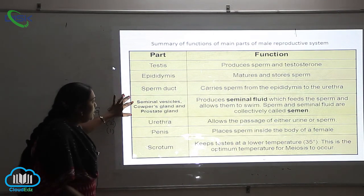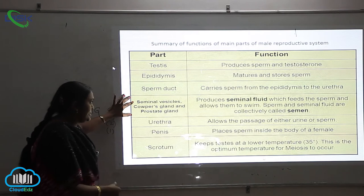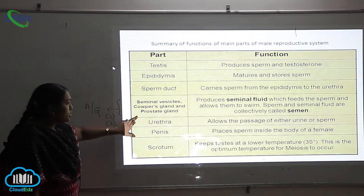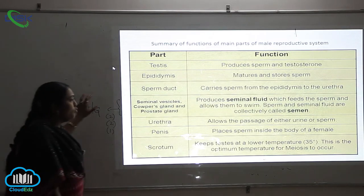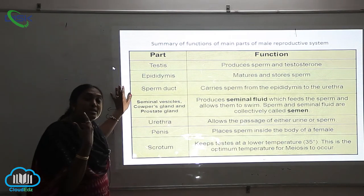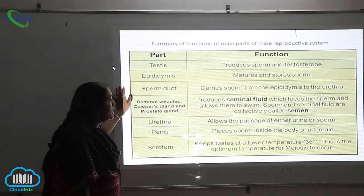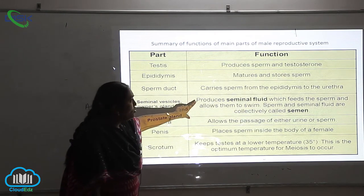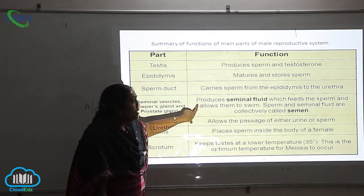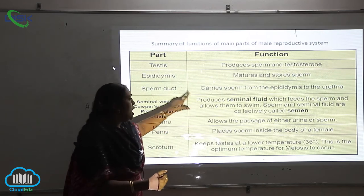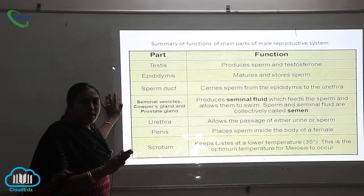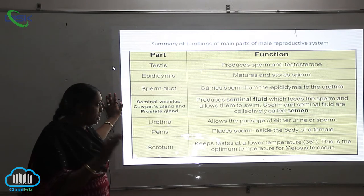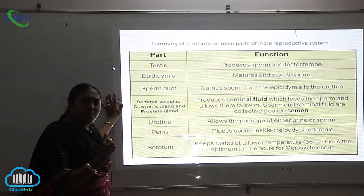Next are the seminal vesicles, corpus glands, and prostate glands — these three are called the accessory glands. What is their function? They produce the seminal fluid which feeds the sperms and allows them to swim.